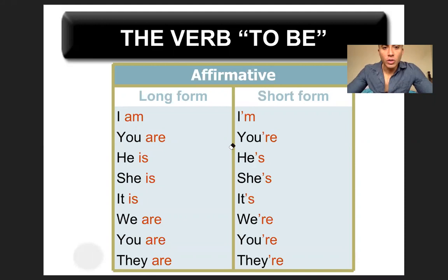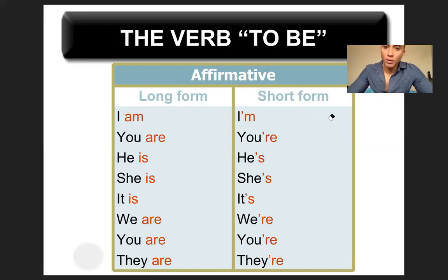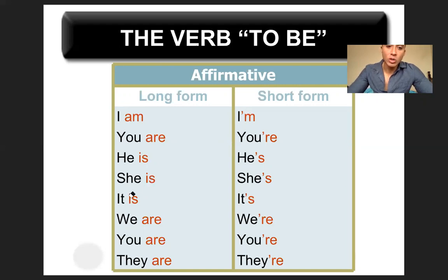Nosotros también tenemos formas cortas y formas largas — eso se llama contractions en inglés. Ustedes pueden escribir I am con dos palabras, o pueden usar una contraction que simplemente une las dos palabras con un apóstrofe. Aquí tienen las formas largas y cortas. Esto significa yo soy o yo estoy, tú eres o tú estás, él es o él está, ella es o ella está, nosotros somos o estamos, ustedes son o están, ellos son o están. I am, you are, he is, she is, it is, we are, you are, and they are.